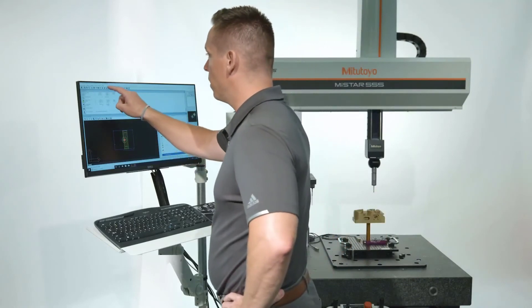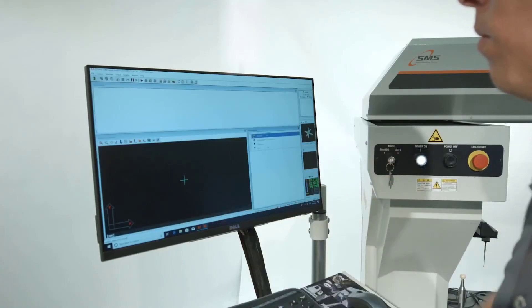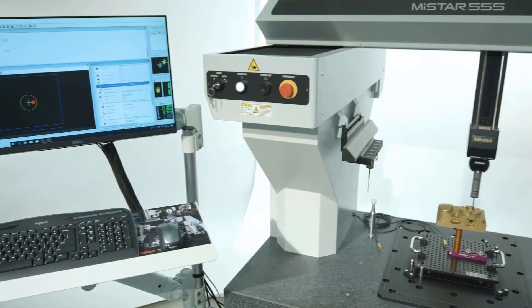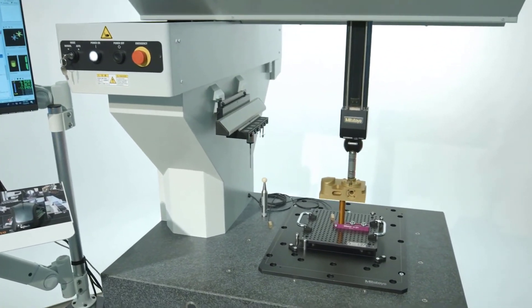Quick Launcher touchscreen software simplifies operator use, making the MyStar easy for anyone to use. Open access on three sides of the MyStar simplifies part loading by an operator or a handling system.